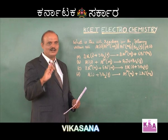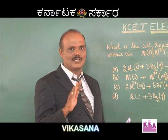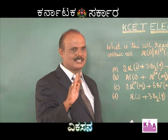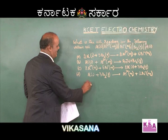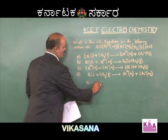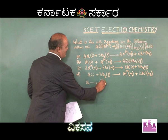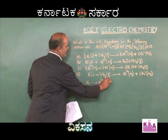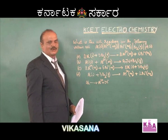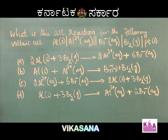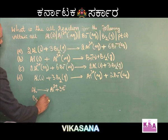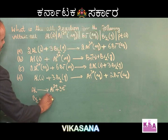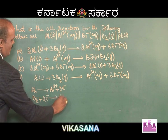At the anode, oxidation takes place. So write the anodic half-reaction separately: Al → Al³⁺ by losing 3 moles of electrons. Then write the cathodic half-reaction: Br2 plus 2 moles of electrons gives 2Br⁻.